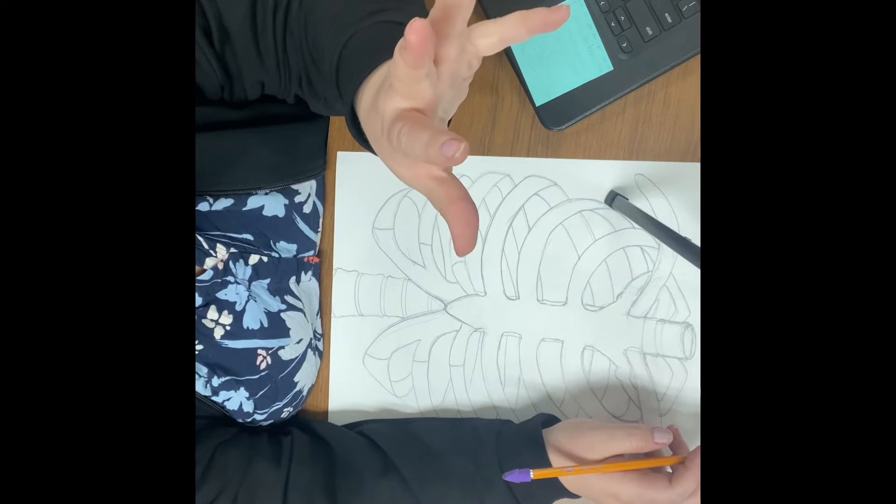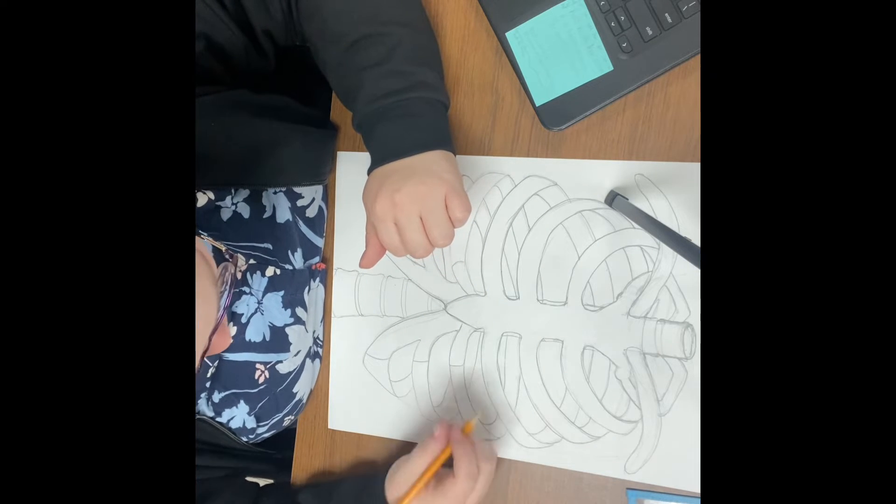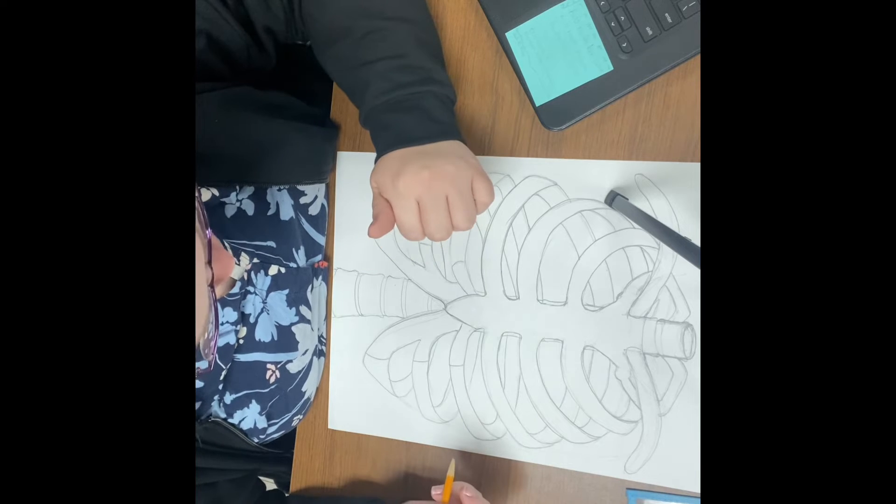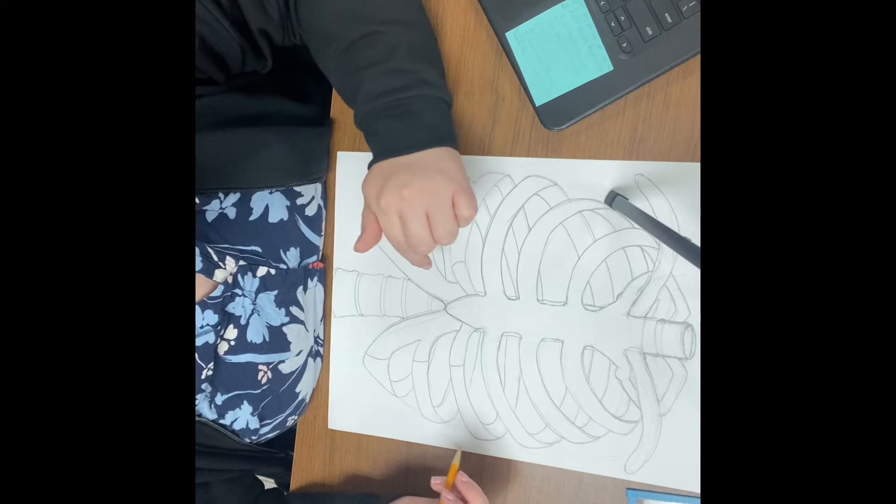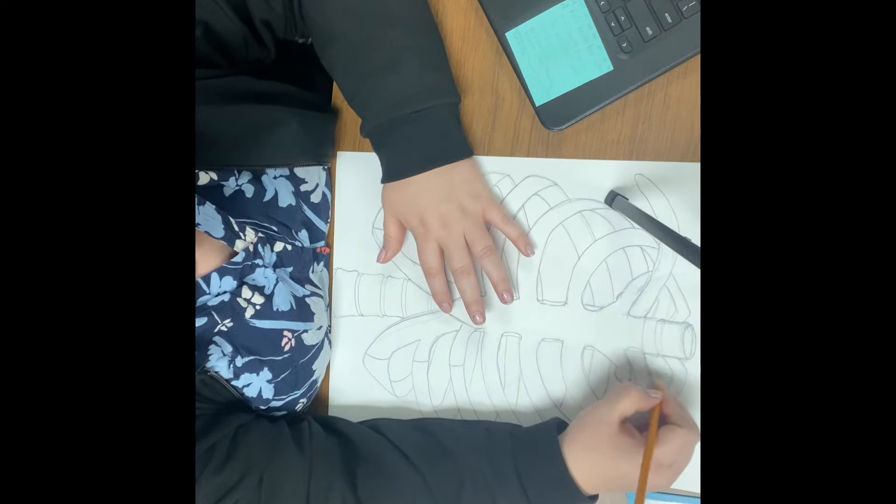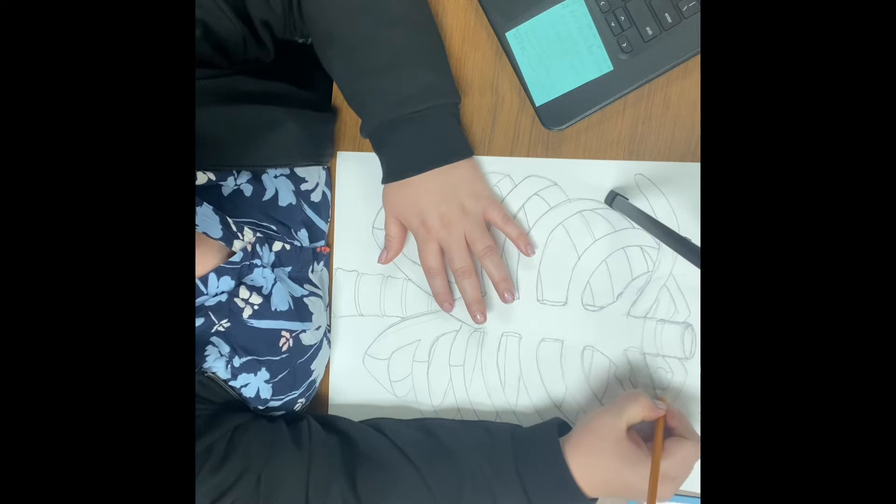One thing that you could do is start looking for the pattern that you want. I'll just do daisies as the example up here, and I'm going to start drawing a daisy back here inside my first negative space.